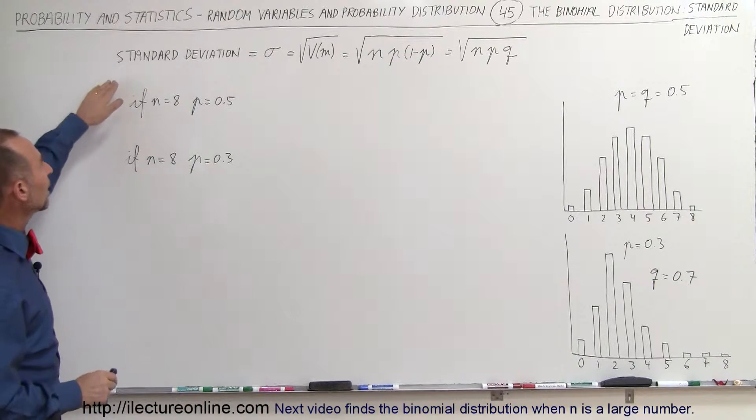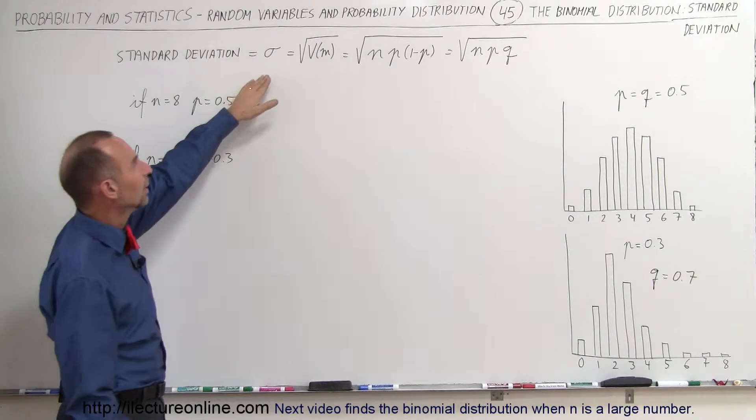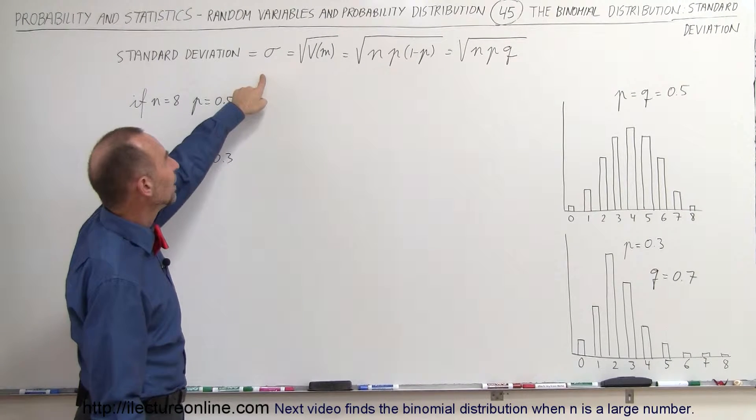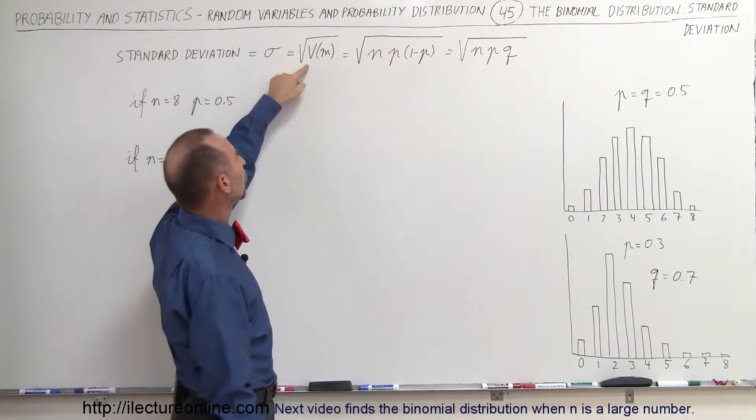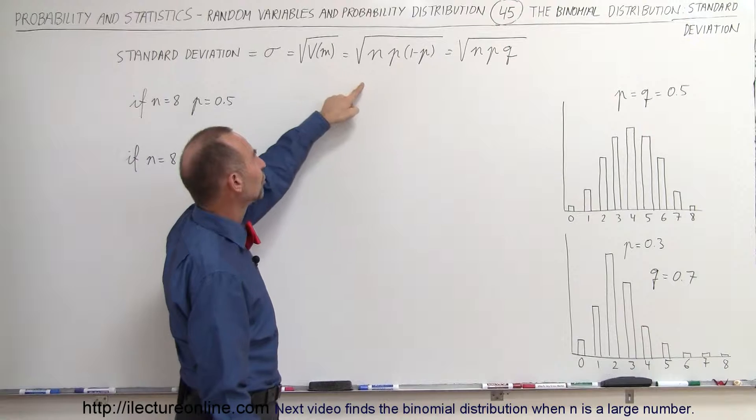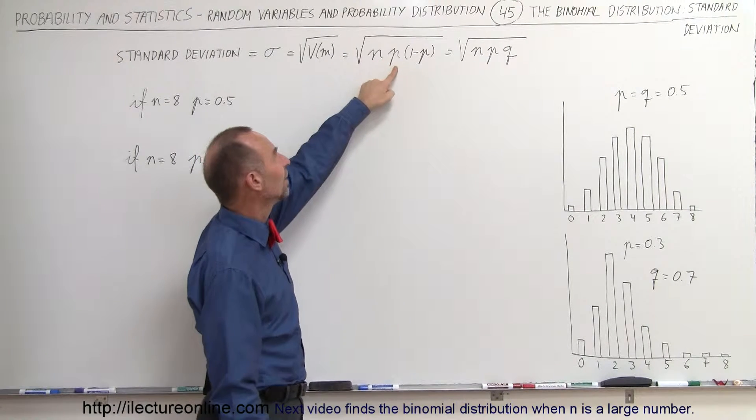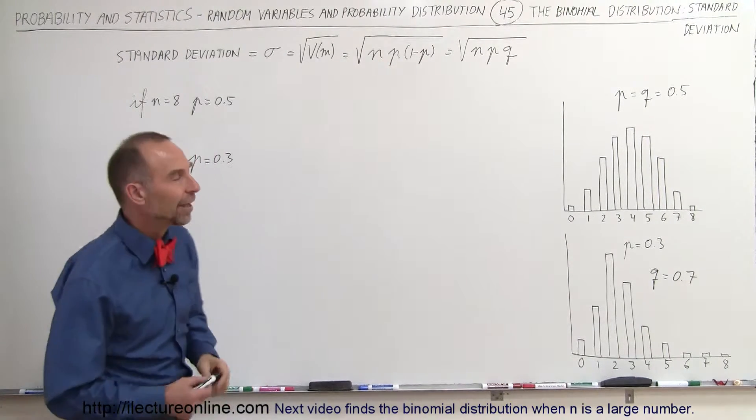So the way we approximate the standard deviation for binomial distributions is the equation that's the square root of the variance, and the variance of course is the number of trials times the probability of success times the probability of failure.